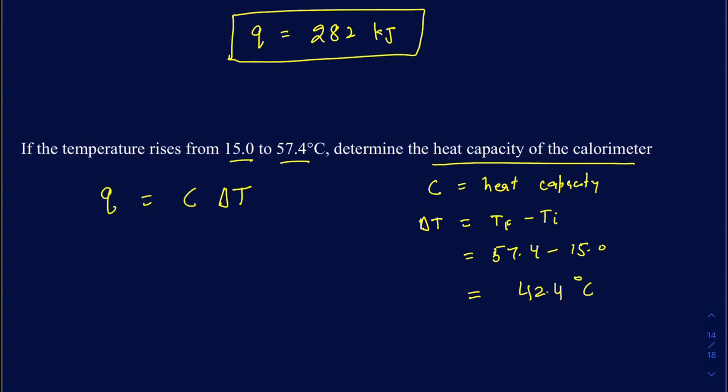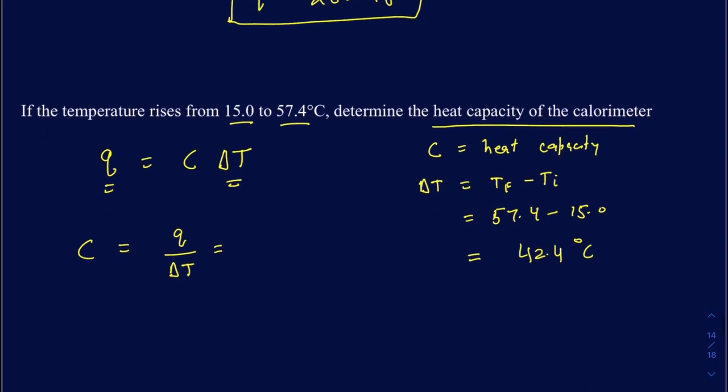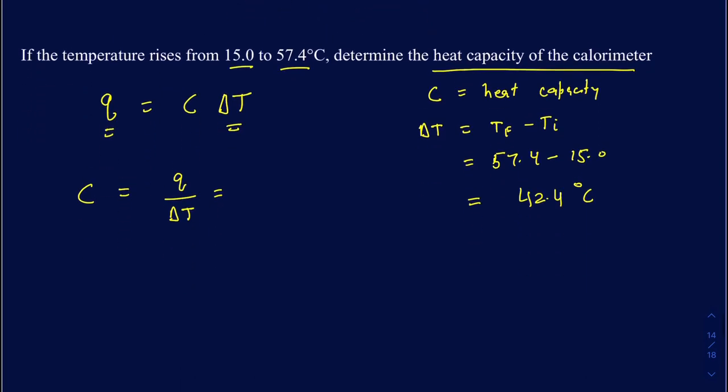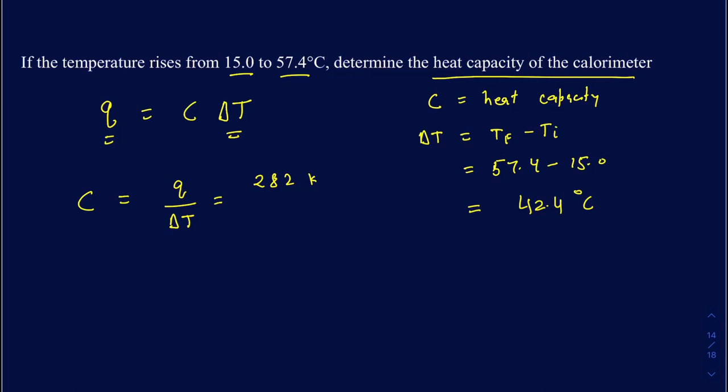Okay, so we actually know the Q, and we also know the delta T now, and all you've really got to do is just go ahead and plug it in and figure out what the C is going to be. So, your Q was 282 kilojoules, so I'll go ahead and write that down, 282 kilojoules, and your delta T is going to be 42.4 degrees Celsius. Okay, so when you do this math, 282 divided by 42.4 gives you 6.65 kilojoules, 6.65 kilojoules per degree Celsius.